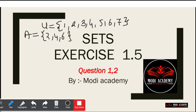Always remember that all elements must be present in the universal set. So 2 is present, 4 is present, 6 is present — those are in A. But elements like 1, 3, 5, 7 are in the universal set but not in A — those form the complement. So A = {2, 4, 6} and A' (A dash) = {1, 3, 5, 7}.